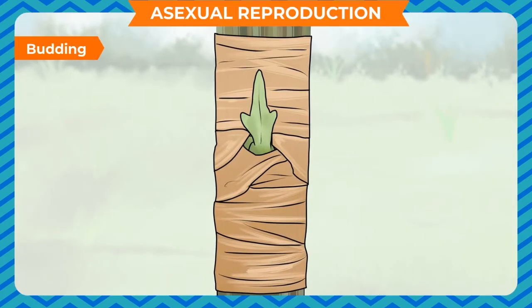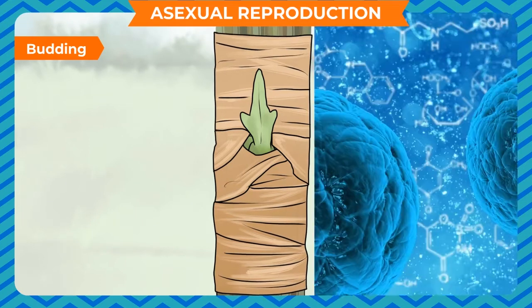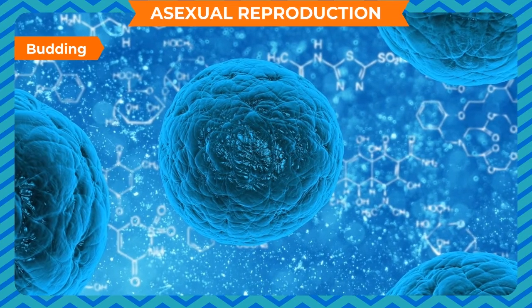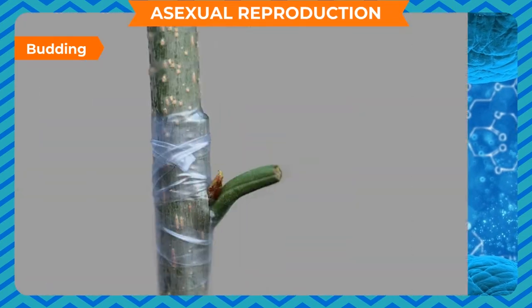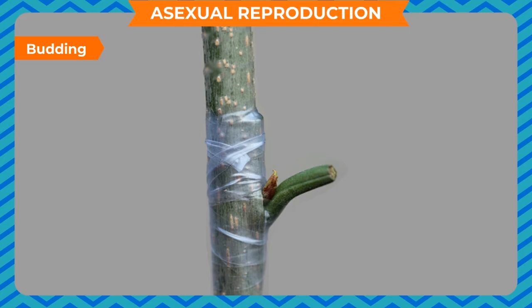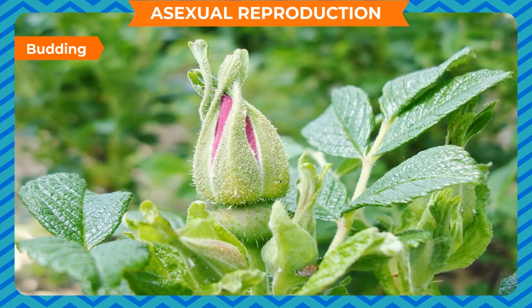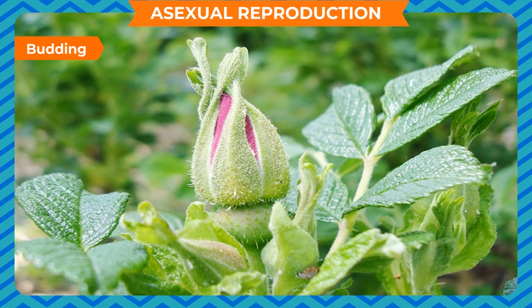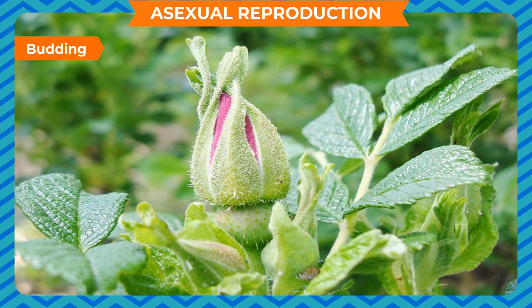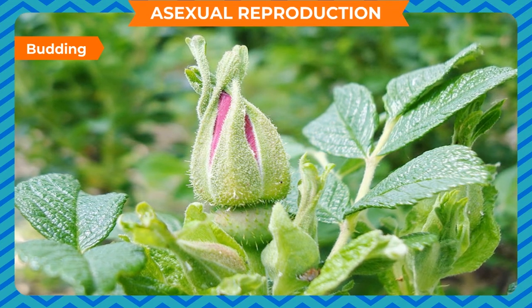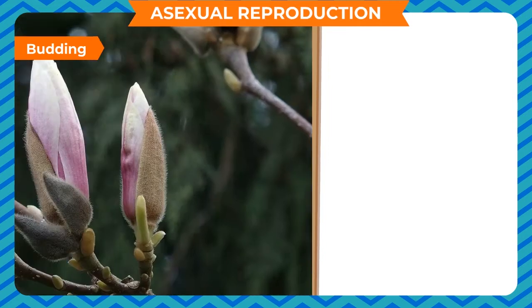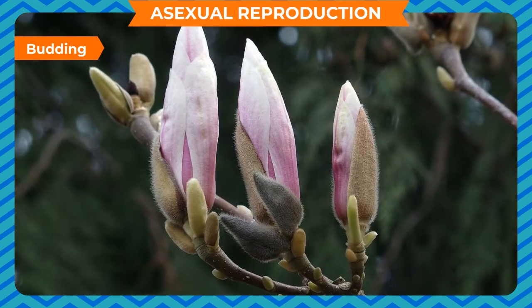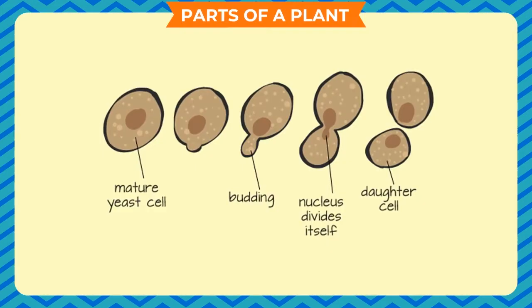Budding: This process is observed in unicellular as well as multicellular organisms. A small outgrowth starts on the cell which gradually separates from the cell, giving rise to a new organism. Before the bud is cut off, the nucleus divides into two and passes on to the bud.